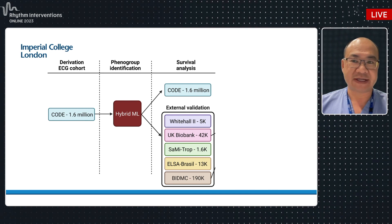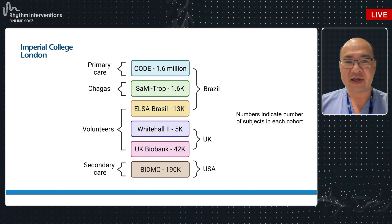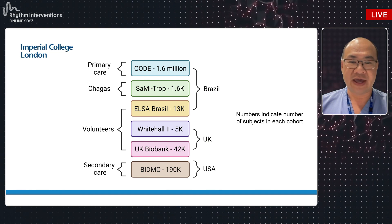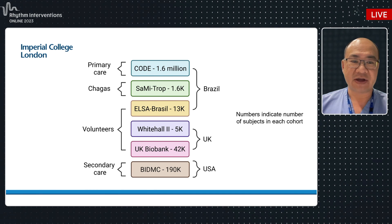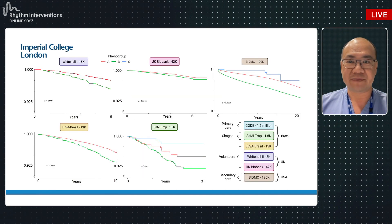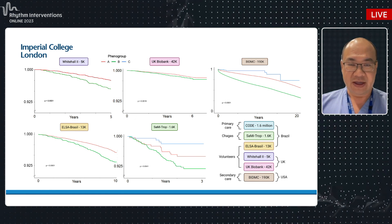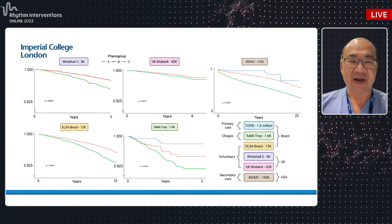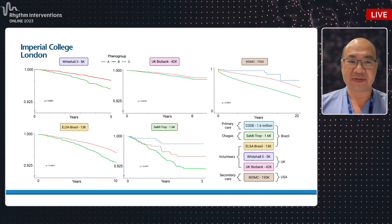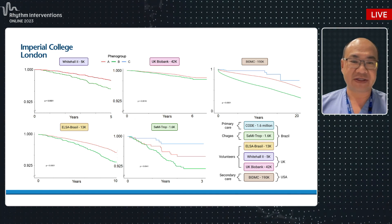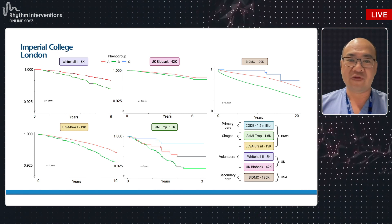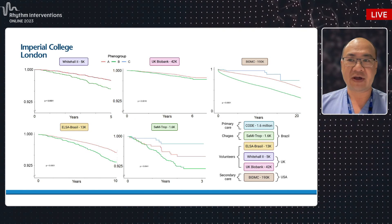We then wanted to test this externally, since there's a risk of overtraining a model to your own derivation set. We looked at five other cohorts from Brazil, the UK, and the US, ranging from volunteers in primary and secondary care through to Chagas cardiomyopathy patients in Brazil. The model clearly externally validated well across all these cohorts — across multiple countries and different patient types — with neural network-derived features identifying groups with worse mortality profiles over five to twenty years, as shown on the Kaplan-Meier survival curves.